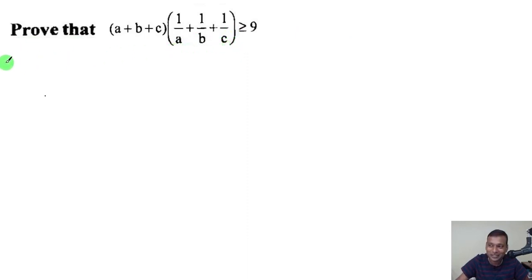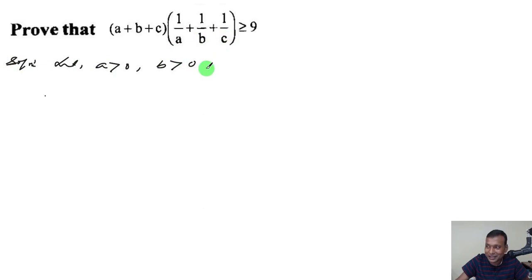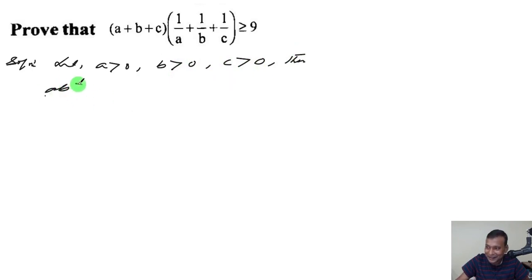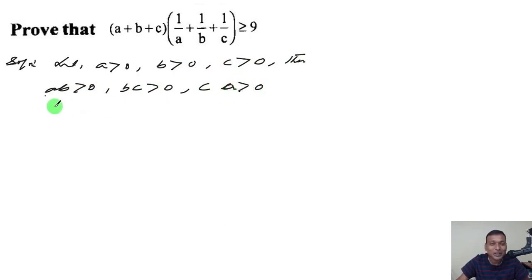To prove it, let us suppose a > 0, b > 0, and c > 0. Then ab > 0, bc > 0, and ca > 0, because the product of positive numbers is always positive.